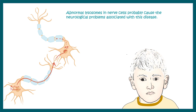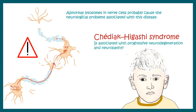Another implication of Chediak-Higashi syndrome is neuropathy or progressive neurodegeneration, where neurons are severely affected because neurons also need lysosomal function for their normal physiology. In Chediak-Higashi syndrome, that function is impaired, so the risk of neuropathy or progressive neurodegeneration is increased.